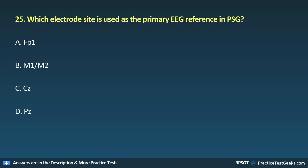Question 25: Which electrode site is used as the primary EEG reference in PSG? A. FP1, B. M1 or M2, C. Cz, D. Pz.